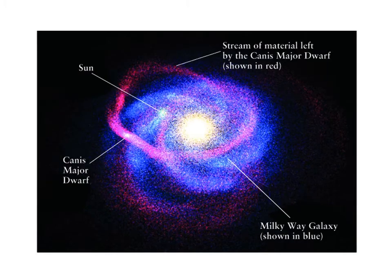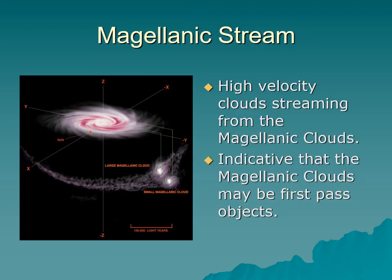Looking at our own galaxy, there are swarms of gas and stars swirling around and mixing with the rest of the Milky Way, indicating we too have eaten companion galaxies. Even the Magellanic Clouds are streaming material behind them as they slow down, spiraling into our galaxy — they're going to be eaten in the future. Indications based on their speed suggest this may be their first close pass, and they likely won't survive more than a couple of passes.